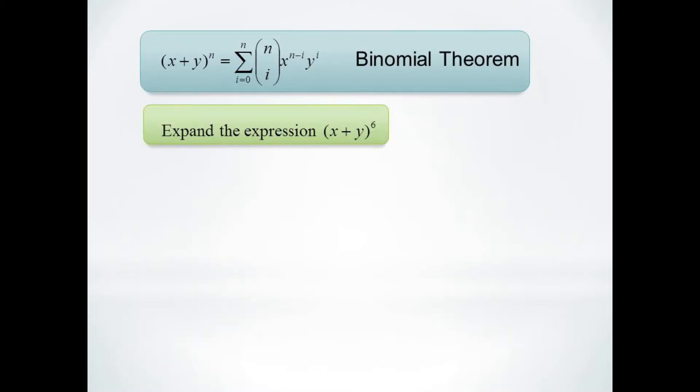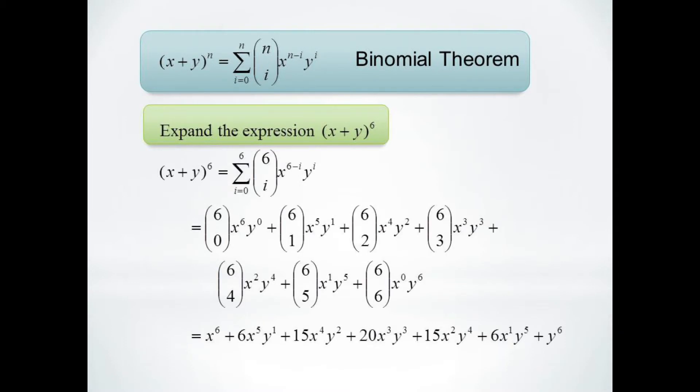Let's consider some examples. We can start with x plus y to the 6. Start by thinking about the coefficients. These are going to be 6 choose 0 through 6 choose 6.